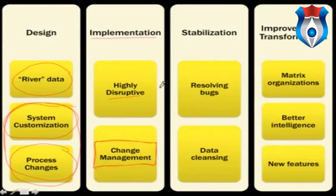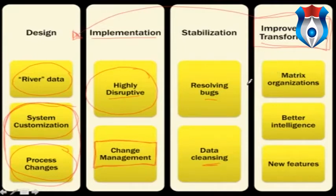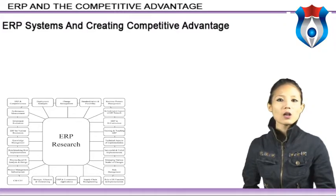Then we have the stabilization phase, where we start fixing all the things we've discovered during the disruptive implementation phase — finding bugs in software and cleaning our data. And lastly, hopefully we get to the improvement phase. This is where people were generally selling you back in the design phase on things like matrix organizations, improving your intelligence, and doing new features. But you can't do this until you fix the bugs, clean the data, decide how to customize things, and go through all the disruptive implementation phase.